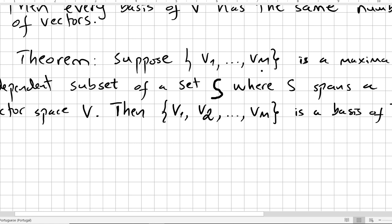So suppose v1, v2, up to vm is a maximum independent subset of a set S, where S spans a vector space V. V is the vector space. Then v1, v2, v3, up to vm is a basis of V. So basically, if this is a maximum independent subset of a set, and that set spans a vector space, then that will be a basis for the same space.